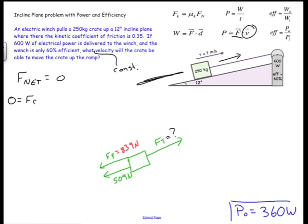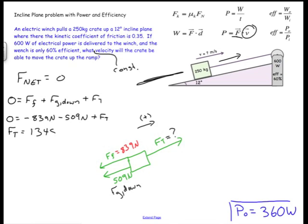Zero equals the friction plus the F_g down, that's what I frequently call this one, F_g down the plane, plus the tension. I'm going to make this the positive direction for this calculation. So I have 0 equals negative 839 newtons minus 509 newtons plus the F_t. This F_t equals 1348, and I'm still using those rounded numbers, so I might have a little compounding rounding error going on. But there's that tension. I have all the pieces I need to finish this problem.